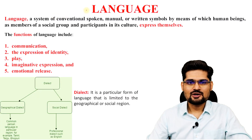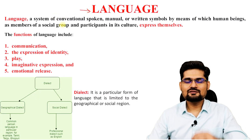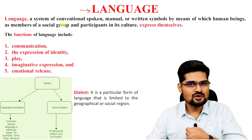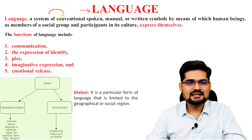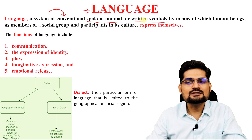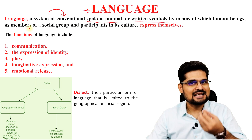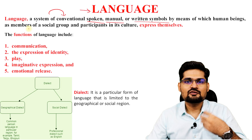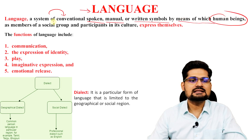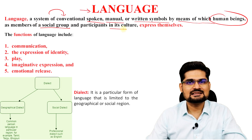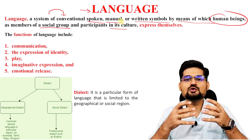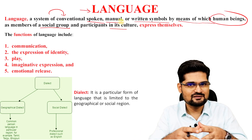First let's talk about language. When we say language, how is it associated with geography? How is it part of perspectives in human geography? Language is basically a system of conventional spoken, manual or written symbols — the alphabet — from which we derive various meanings. It is the means by which human beings, as members of a social group and participants in a culture, tend to express themselves. So language is a tool for expression.